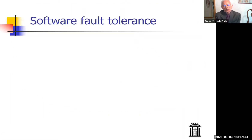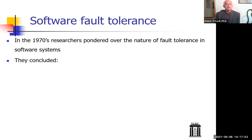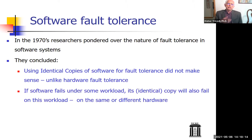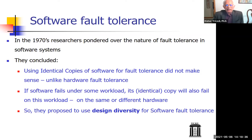Software fault tolerance was pondered in the 1970s, and researchers at that time concluded that using identical copies of software for fault tolerance did not make sense — unlike hardware fault tolerance. The notion was that if software fails under some workload, its identical copy with exactly the same bugs will also fail on that workload, even on different hardware. Therefore they concluded that software fault tolerance should be based not on identical copies but on diverse copies, using what is called design diversity.